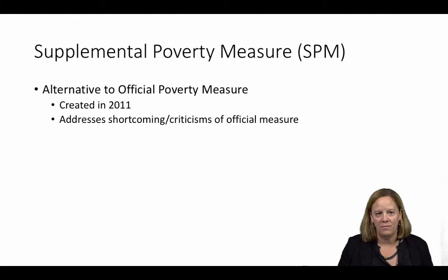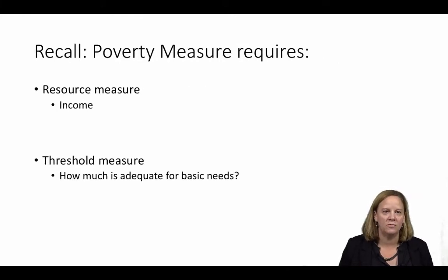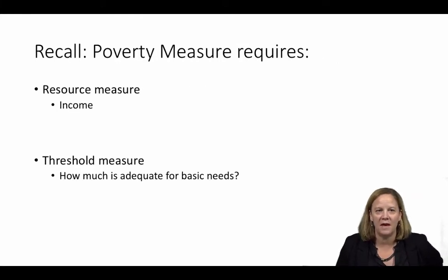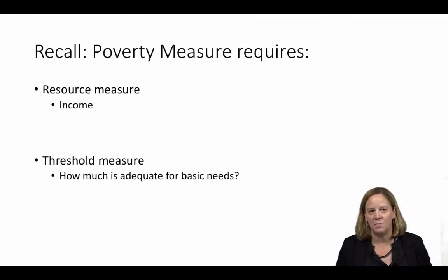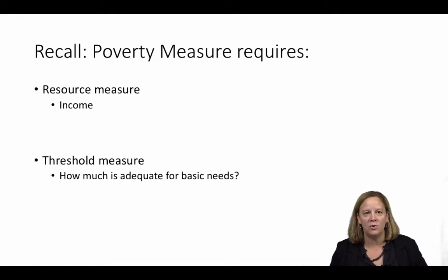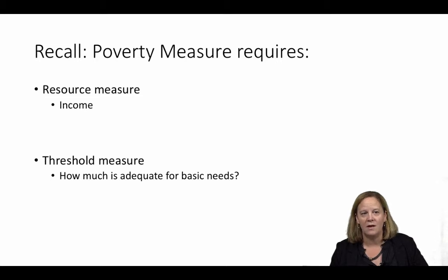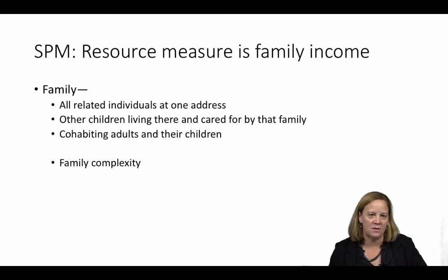Recall that any poverty measure consists of a measure of resources — cash income in the case of the U.S. Official Measure — and some threshold that establishes the level at which these resources are considered adequate or sufficient. Let's begin with the measure of resources.